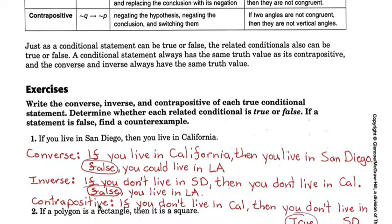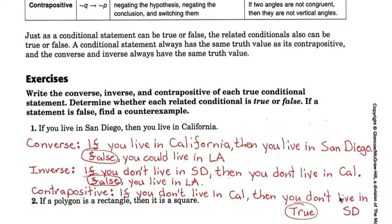The last one, contrapositive, that's where we switcheroo and we not both of them. So we have to switch California and San Diego and give them nots. If you don't live in California, notice I put this one up front, then you don't live in San Diego. And that is actually a true statement.